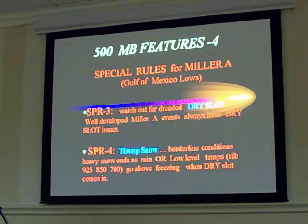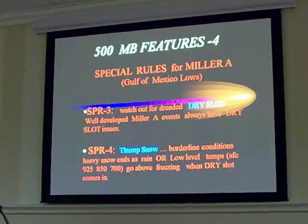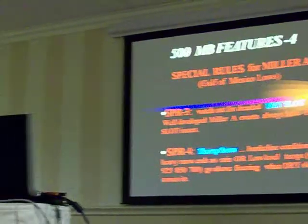Special rule number three: watch out for the dreaded dry slot — cursed be its name. When you're dealing with major systems coming out of the Gulf of Mexico, you'll always get your dry slot. January 2000, everyone gets all excited, and the dry slot moves into New York City and southern New England; you end up with six or eight inches or something like that, and everybody else down south got hammered. The classic chaos is the big systems coming out of the Gulf of Mexico always have dry slots in them. You have to watch it carefully and make sure that doesn't blow your snow forecast.